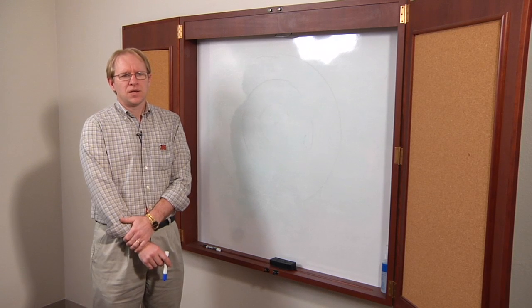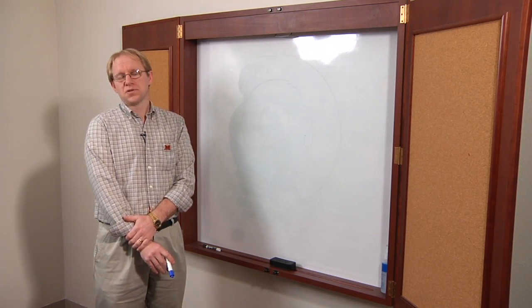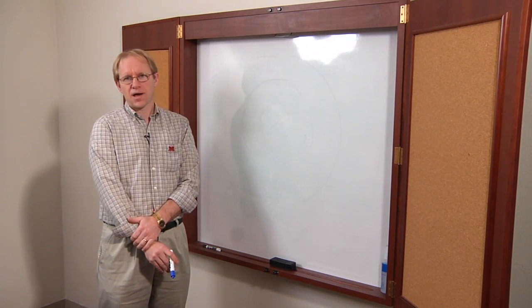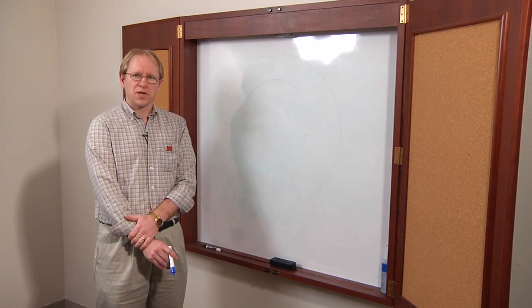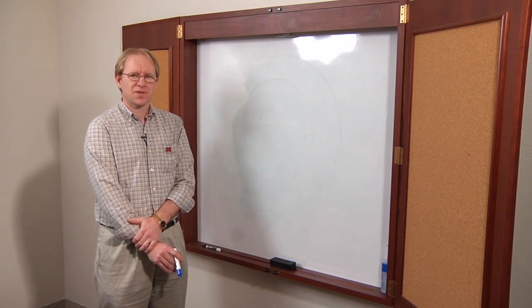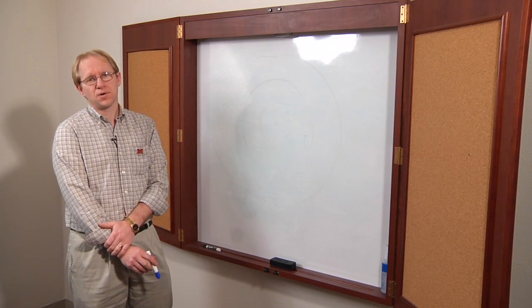I'm going to talk to you a little bit about tsunamis. Tsunamis are formed when you have an earthquake, usually because there's a shift in the bottom of the ocean, and that causes displacement of the water, and that displacement causes a wave to form.